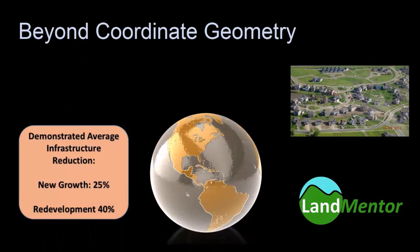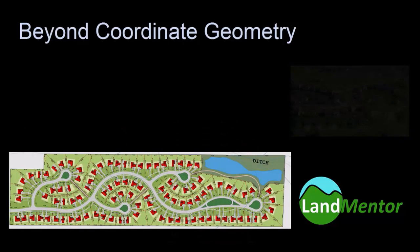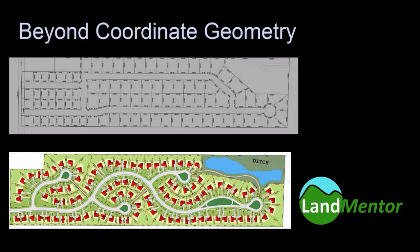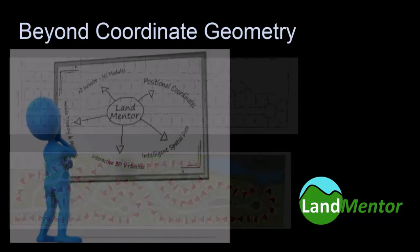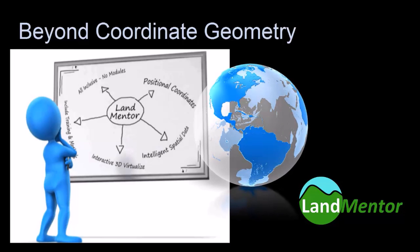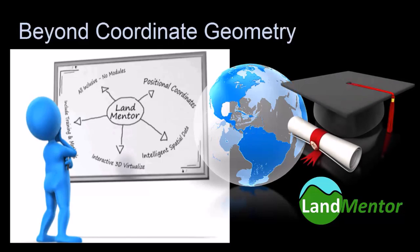The results: a significant reduction in the infrastructure required to develop and redevelop — a demonstrated reduction average of 25% compared to conventional design methods, as measured in almost 1,000 developments in 46 states and 18 countries, harnessing the methods taught to those who invest in LandMentor.